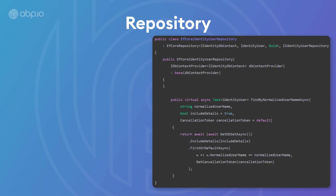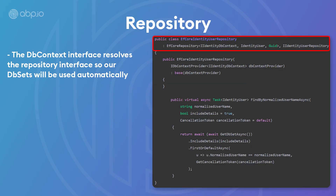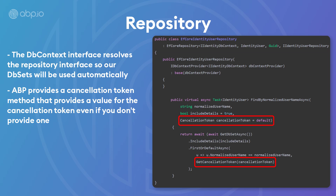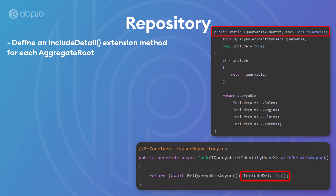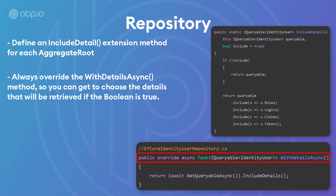As for the repository section, the DbContext interface resolves the repository interface, so our DbSets will be used automatically. ABP provides a cancellation token method that provides a value for the cancellation token even if you don't provide one. Define an includeDetails extension method for each aggregate root, and always override the WithDetailsAsync method so you can choose the details that will be retrieved if the boolean is true.